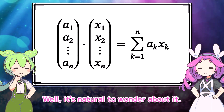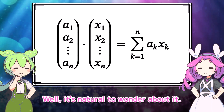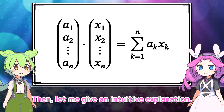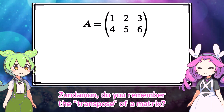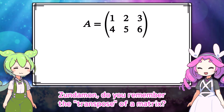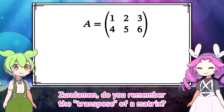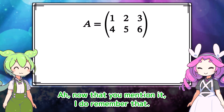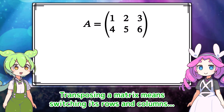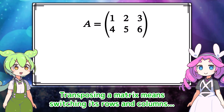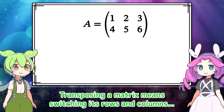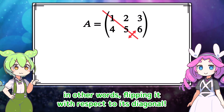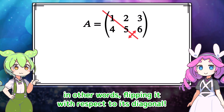It's natural to wonder about it. Then let me give an intuitive explanation. Do you remember the transpose of a matrix? Transposing a matrix means switching its rows and columns — in other words, flipping it with respect to its diagonal.